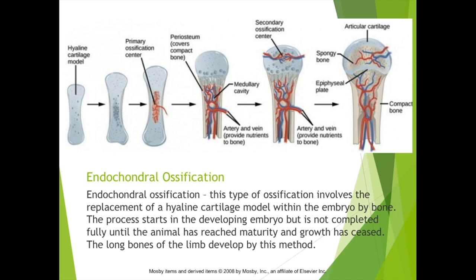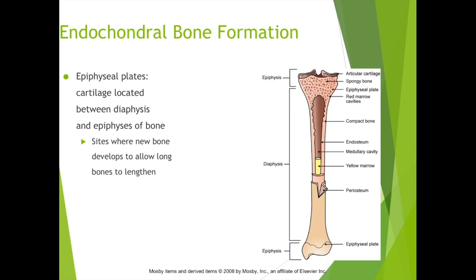In young animals as they're growing, they continuously grow in that first year of life. In young puppies and kittens you'll see the secondary ossification centers — the growth plates — which are plates of cartilage at the end of each bone that continue to grow in length as they get replaced by bone through ossification. The epiphyseal plate cartilage is located between the diaphysis and the epiphysis of bones, toward the end of the bone, and it's the site where new bone develops to allow long bones to lengthen over time.